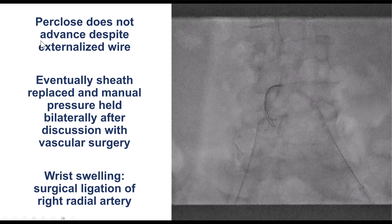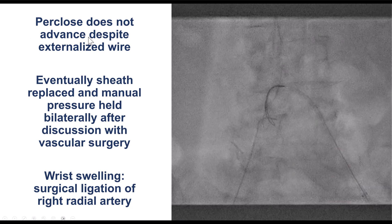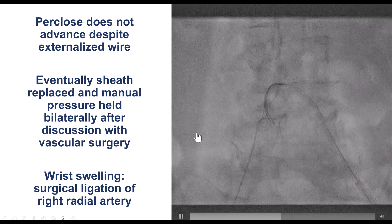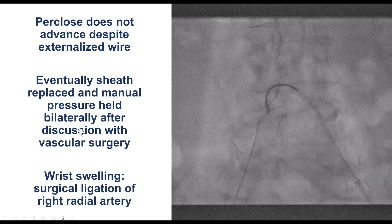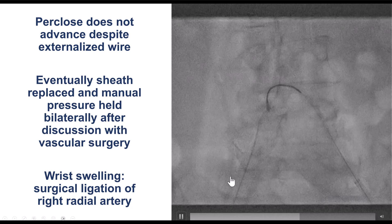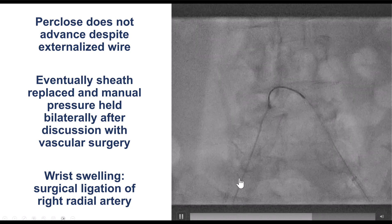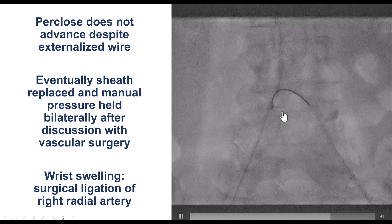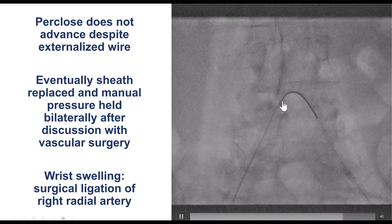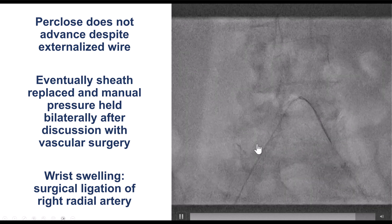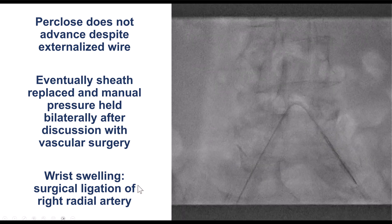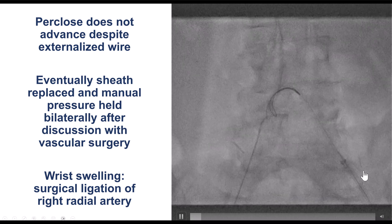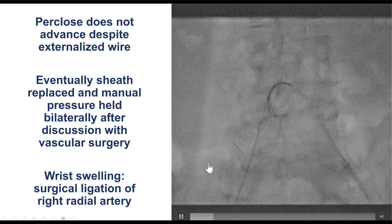But even with the externalized wire, we were unable to advance Perclose to the arteriotomy. After further discussions with vascular surgery, considering that the patient was obese with tortuosity in the iliac and femoral arteries, we eventually decided to do manual pressure. We reversed and did manual compression on the femoral access side. That was successful.